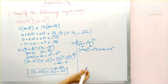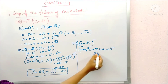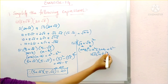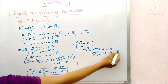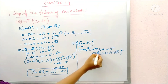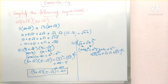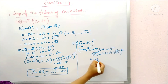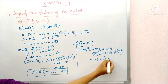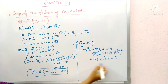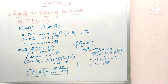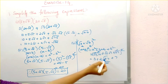Substituting root 3 in place of a and root 7 in place of b: root 3 whole square gives 3, root 7 whole square gives 7 — since the square roots get cancelled. The middle term is 2 into root 3 into root 7, which is 2 root 21. So the result is 3 plus 2 root 21 plus 7, which equals 10 plus 2 root 21. Here, root a into root b equals square root of a into b.